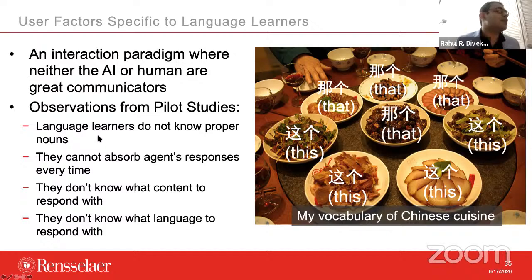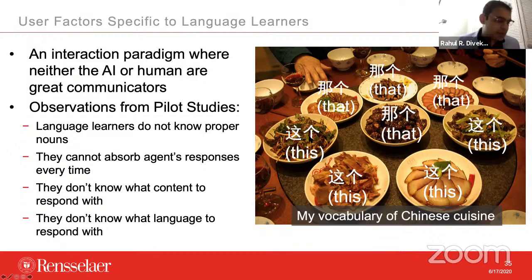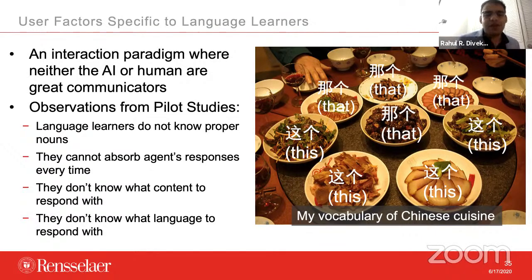Language learners don't know proper nouns. A lot of times textbooks teach them 'I want,' but they don't know how to say the name of a specific dish. That happens even to general people — you go to a restaurant and don't know how to pronounce something on the menu, especially French words. Another problem for language learners is they cannot always absorb the AI agent's response — sometimes it's too fast. AI agents speak at a normal pace, but because it's not the language the user primarily speaks, the response can be too fast.